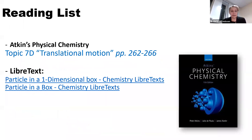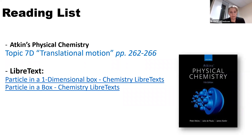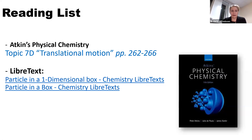The reading I'd expect you to have done before this lecture would be Atkins Physical Chemistry, Topic 7D, called Translational Motion, pages 262 to 266. After the lecture you can also look at chemistry LibreTexts — particularly the Particle in the Box, one-dimensional box entry, which is great for A-level students getting into quantum mechanics. There is also a second link with more mathematics if you want.